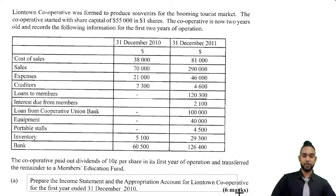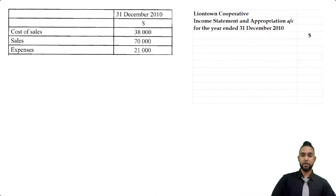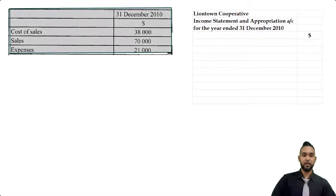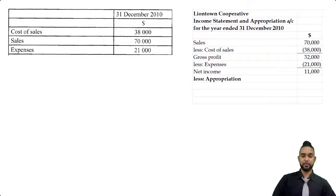The first thing we have to do in part A is prepare the income statement and the appropriation account for Liontown Cooperative for the first year ended 31st December 2010. As per usual, head up your statement with the name of the entity, the name of the statement, and the period to which it applies. Looking at our table, we have cost of sales, sales, and expenses. For an income statement, we take sales minus cost of sales to get gross profit, then deduct expenses to get net income. That's before appropriation, so we put less appropriation.